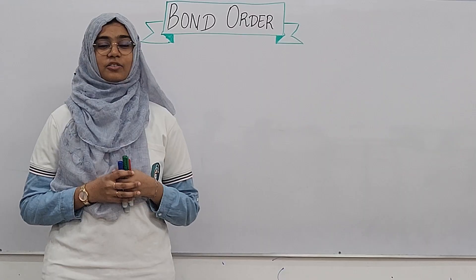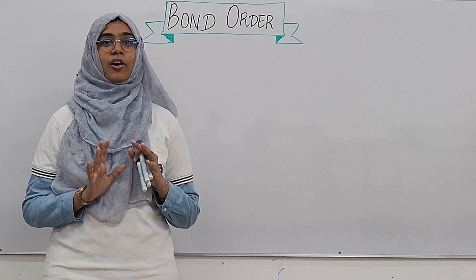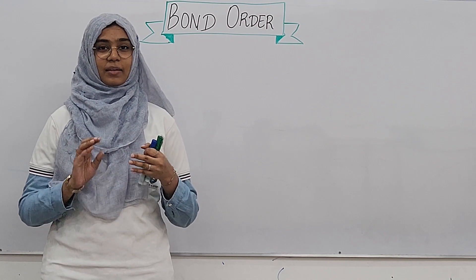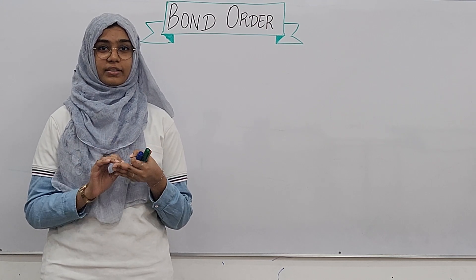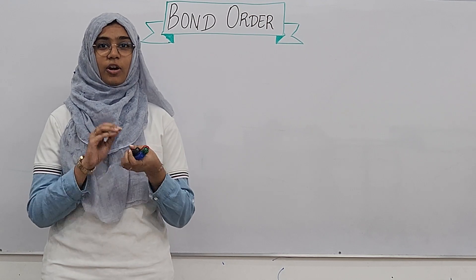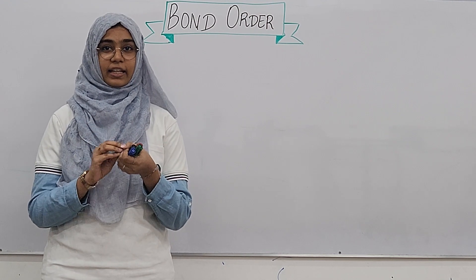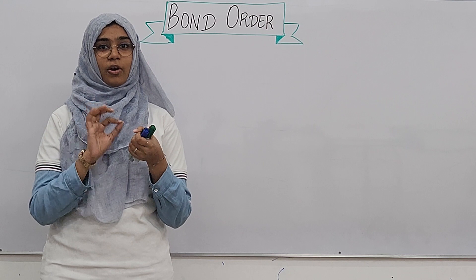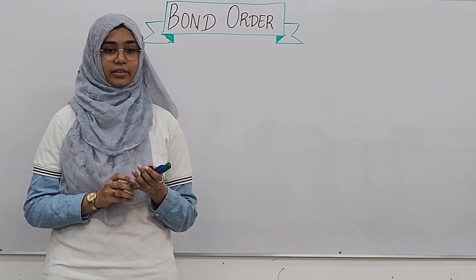In the 11th standard, there is a chapter on chemical bonding. In this chapter, the bond order will be easier to calculate. The bond order is the number of bonds between two atoms in a molecule.